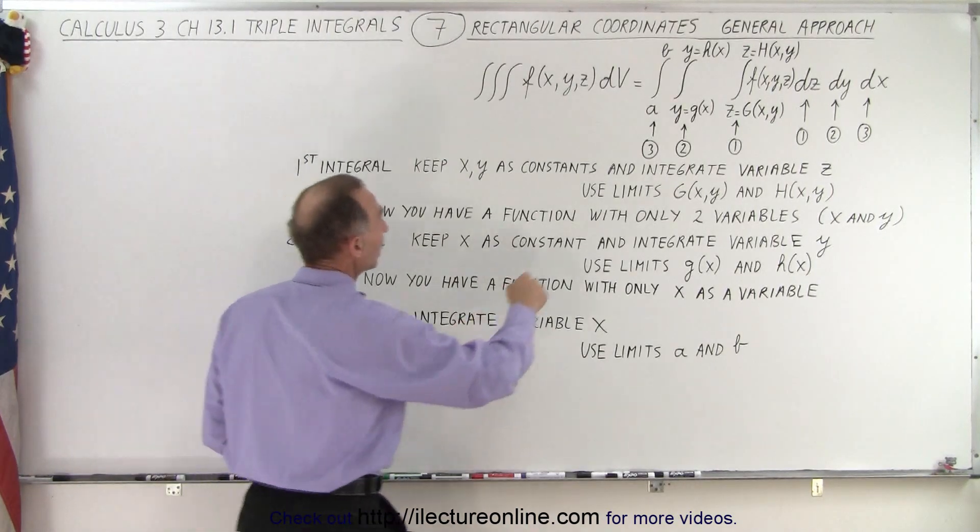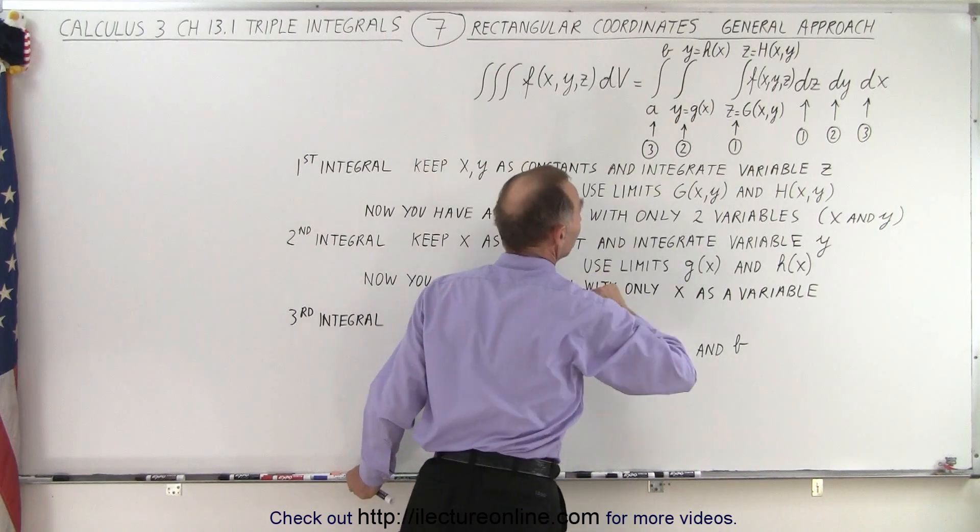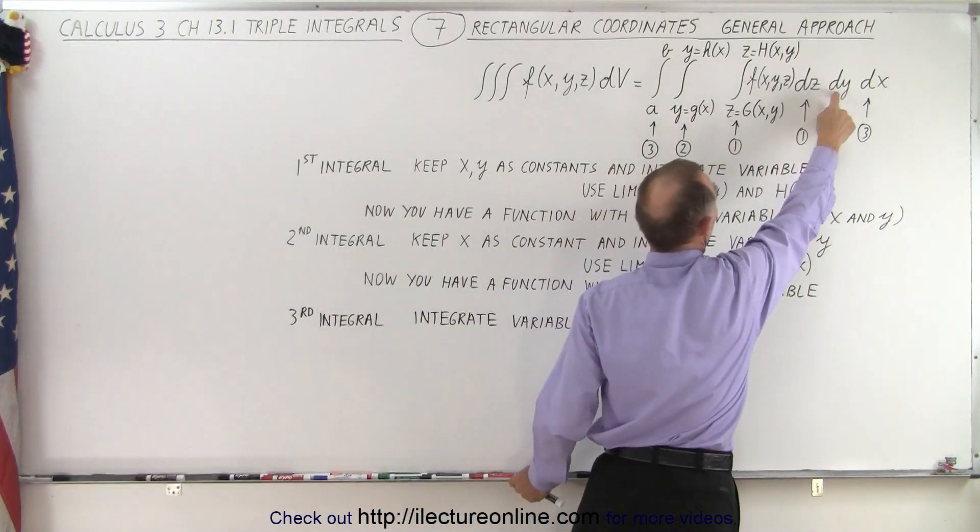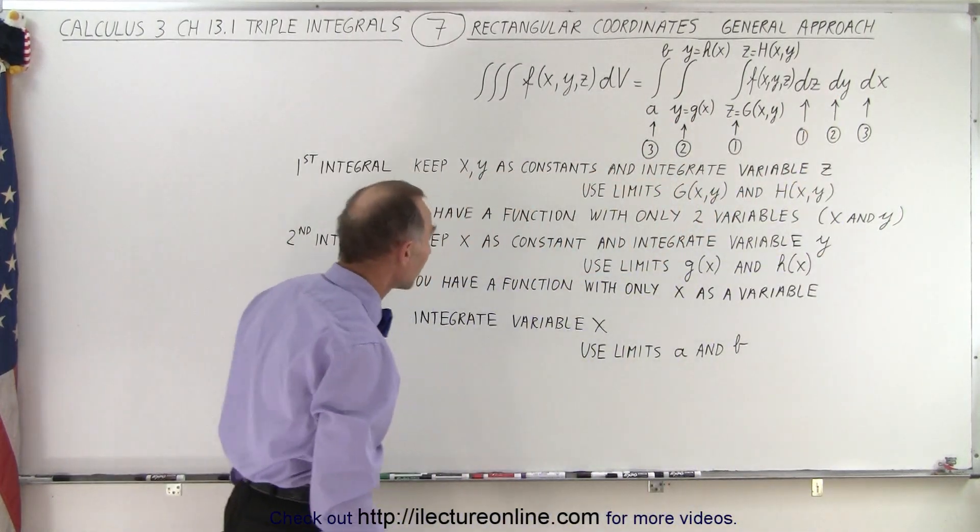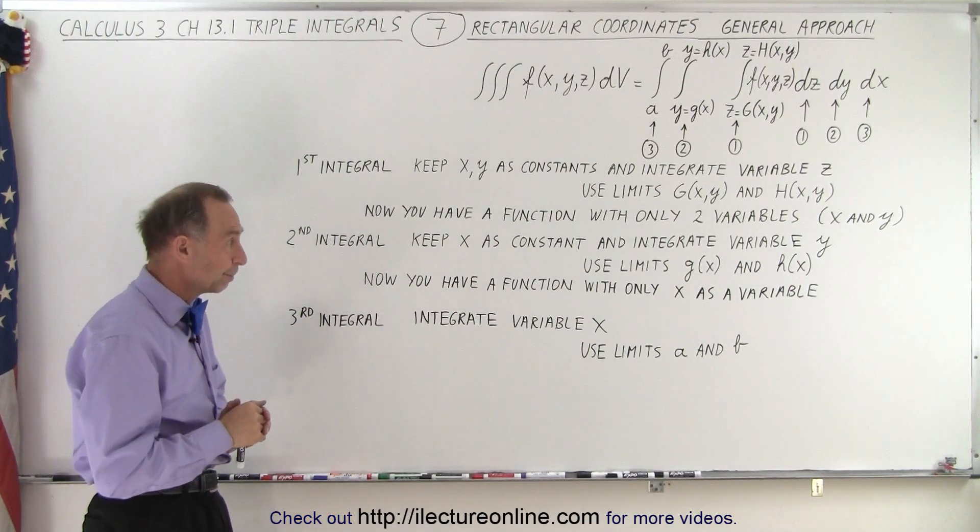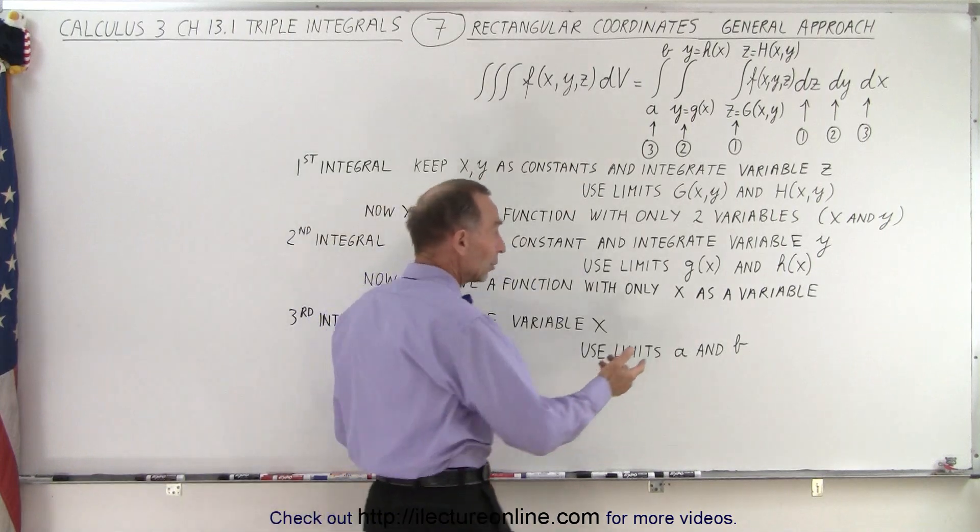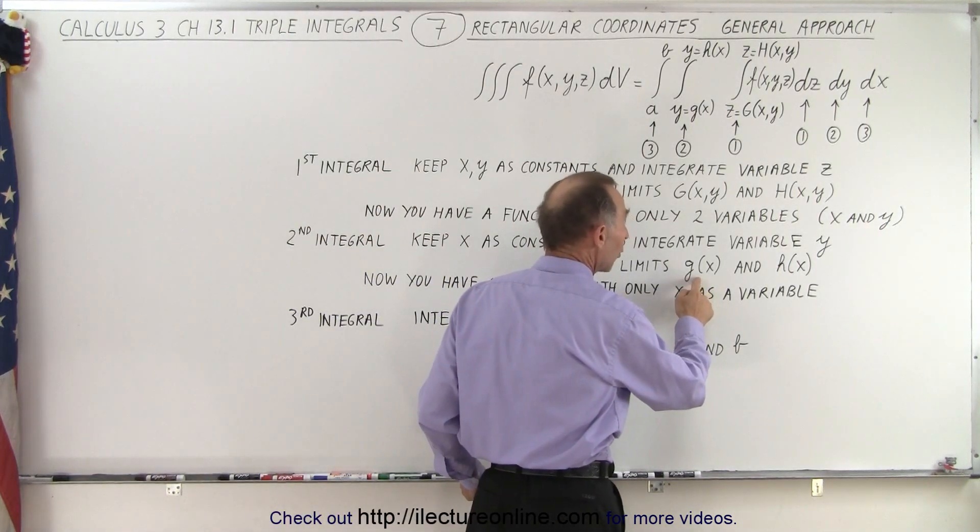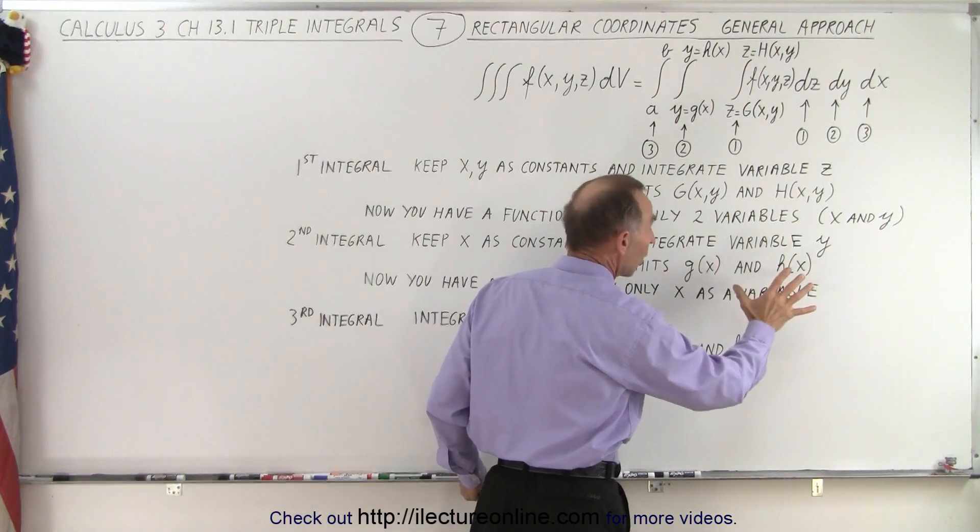So now you're going to integrate a second time. You take your second integral. Let's say we're going to integrate over y, the variable y. That means that you're going to keep x as a constant and y is now your variable. Your limits are going to be functions, but in this case, they're only functions of x, not of y.